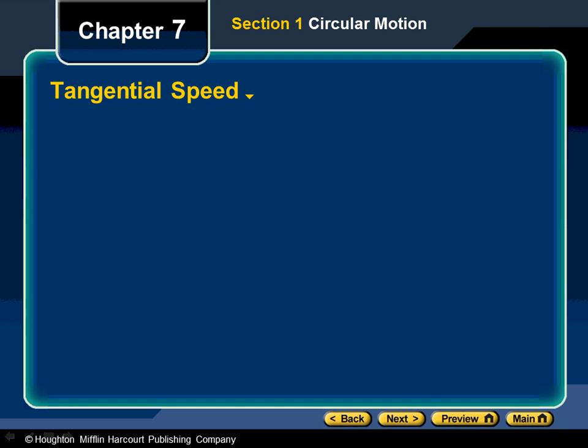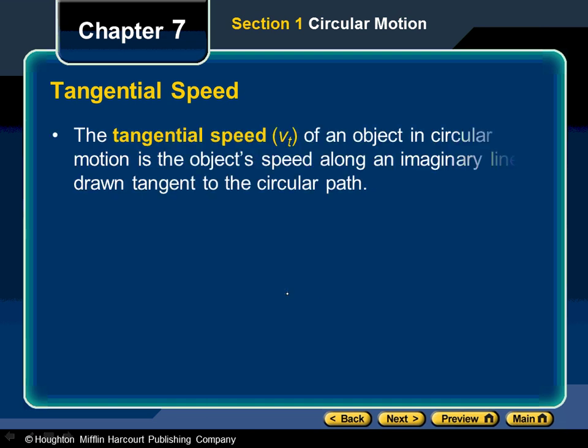All right. Chapter 7. We'll look at section 1 and section 2. Tangential speed. We are going to be talking about circular motion.